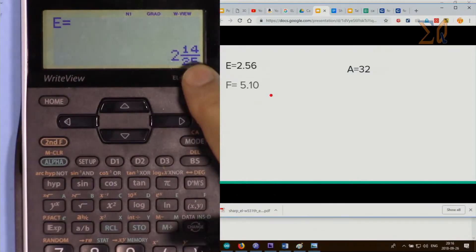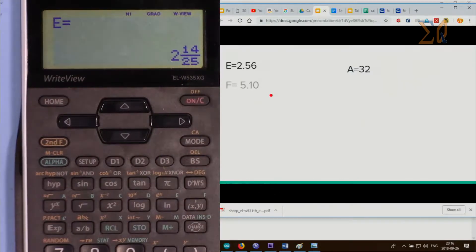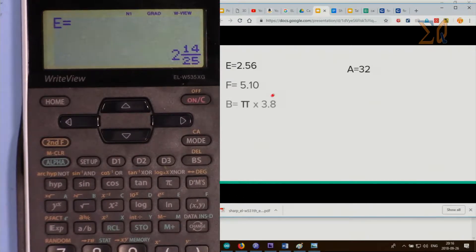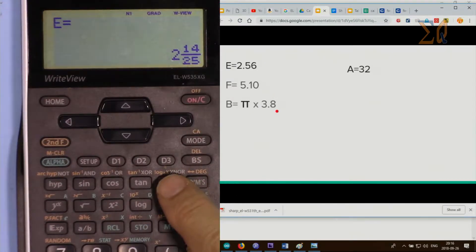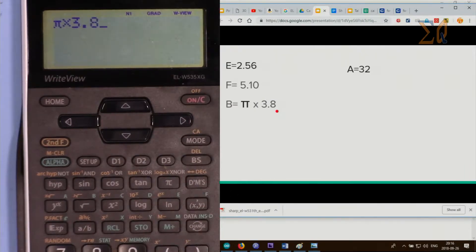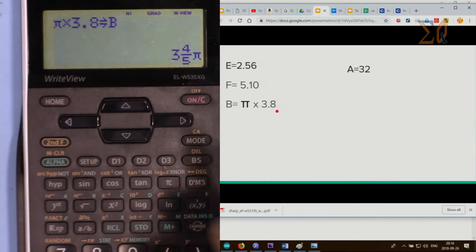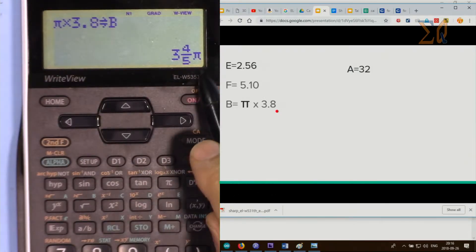Let's store PI times 3.8 into B. So I'm pressing PI times 3.8 and then store B. The calculated value has been stored in B.